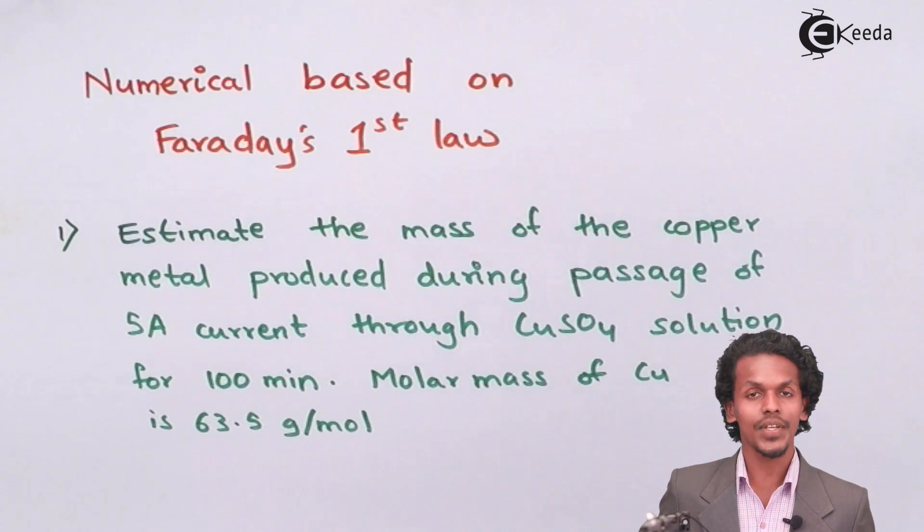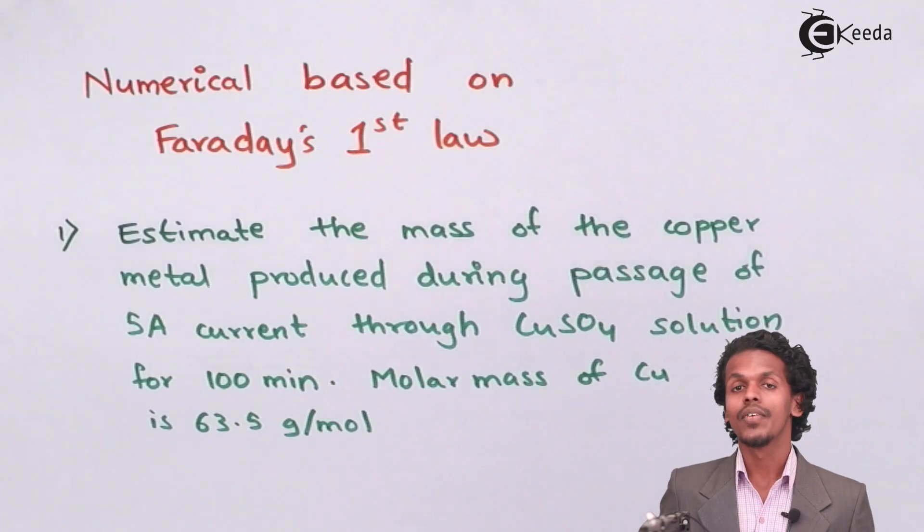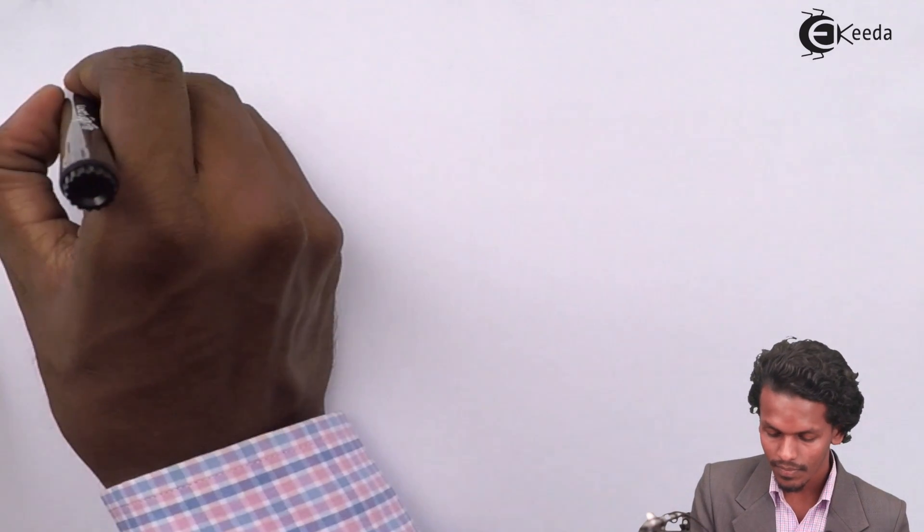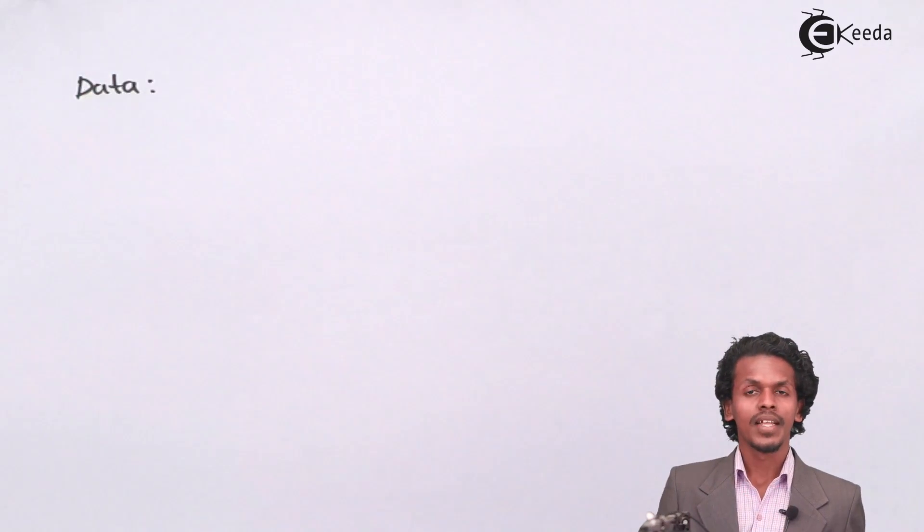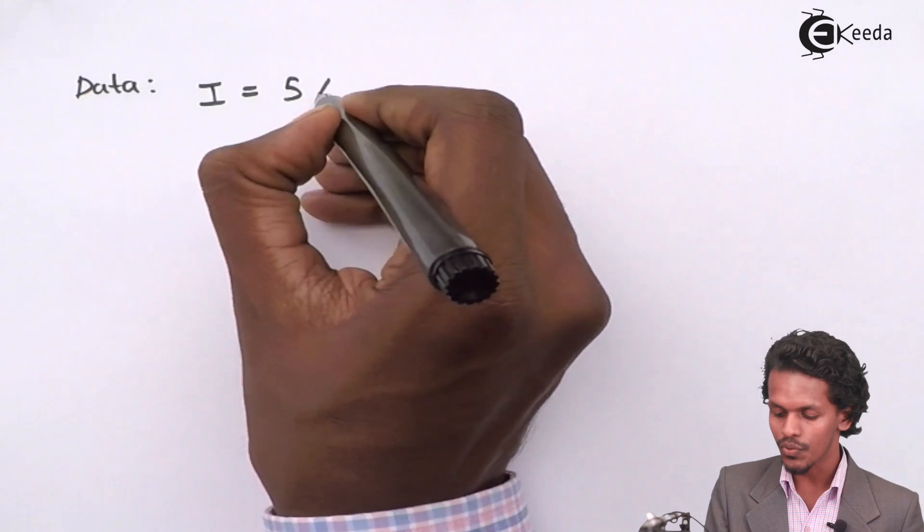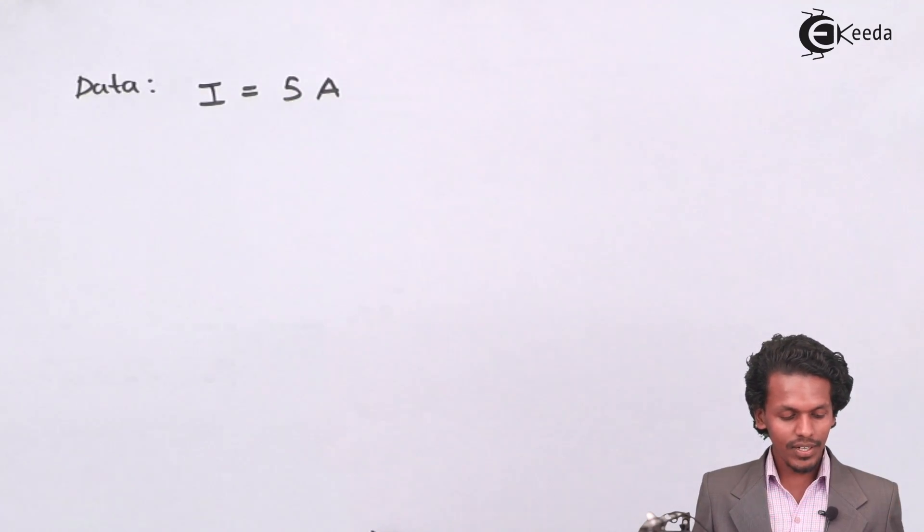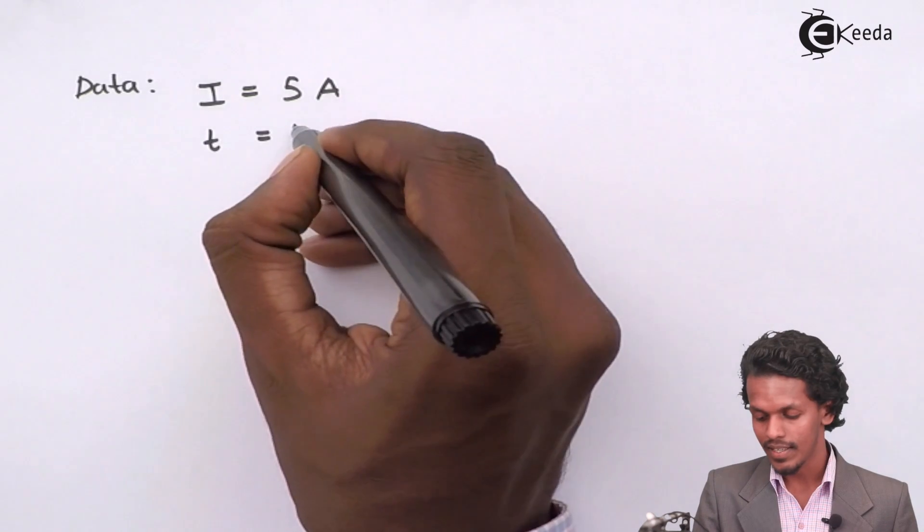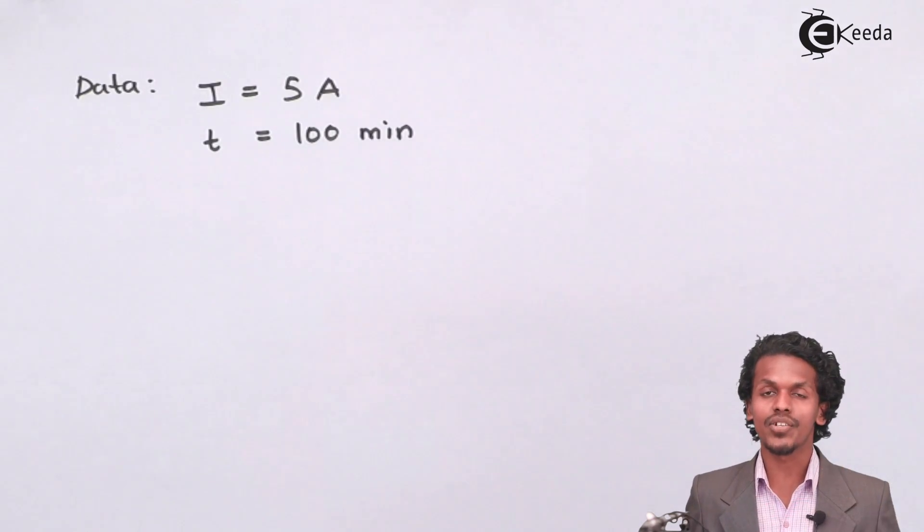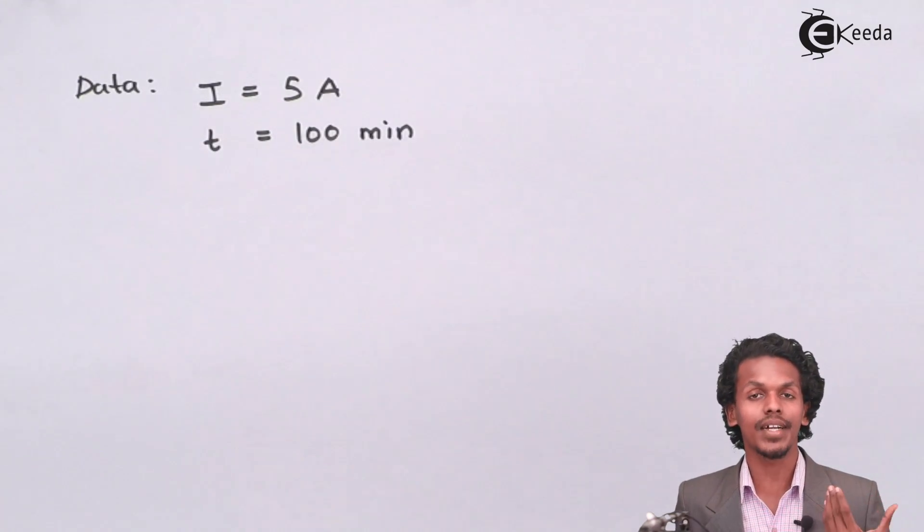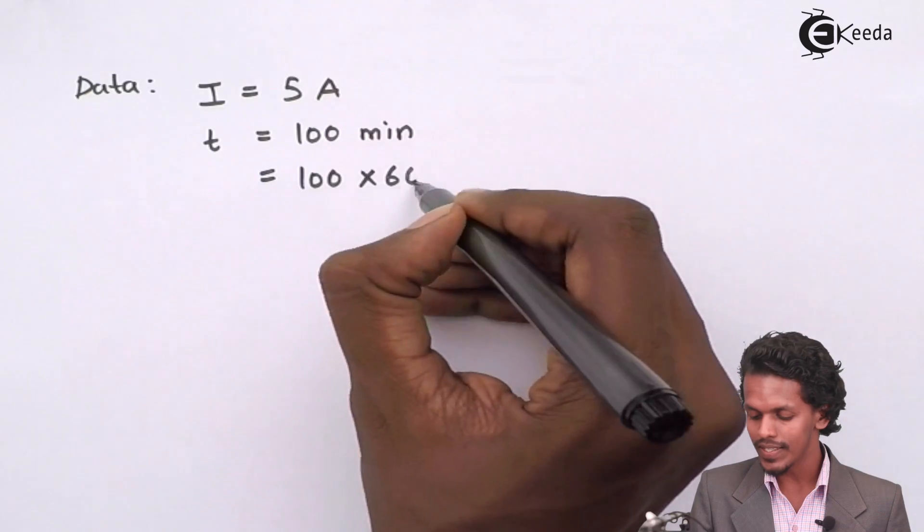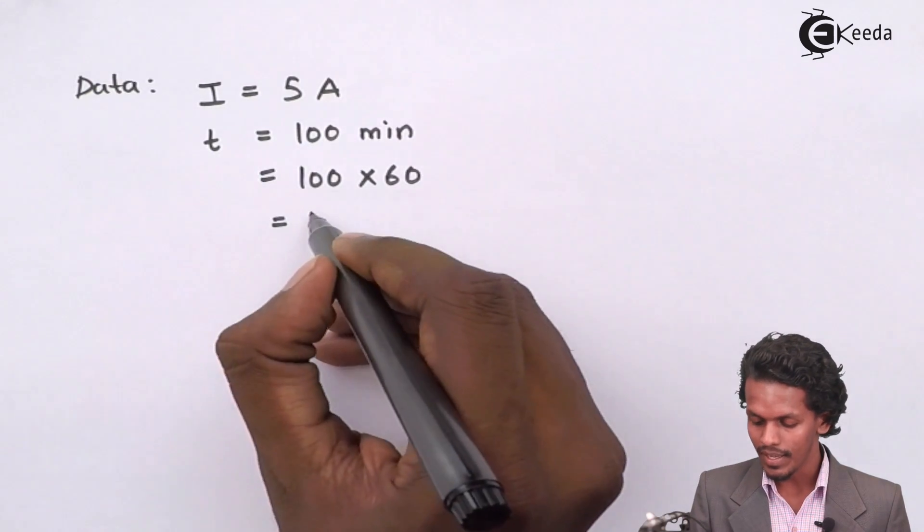In this case, the first thing we should do is extract the data from the given question. The current I equals 5 ampere. They have mentioned time, and in this case the time is 100 minutes. Whenever time is mentioned, convert it into seconds: 100 times 60 seconds equals 6,000 seconds.